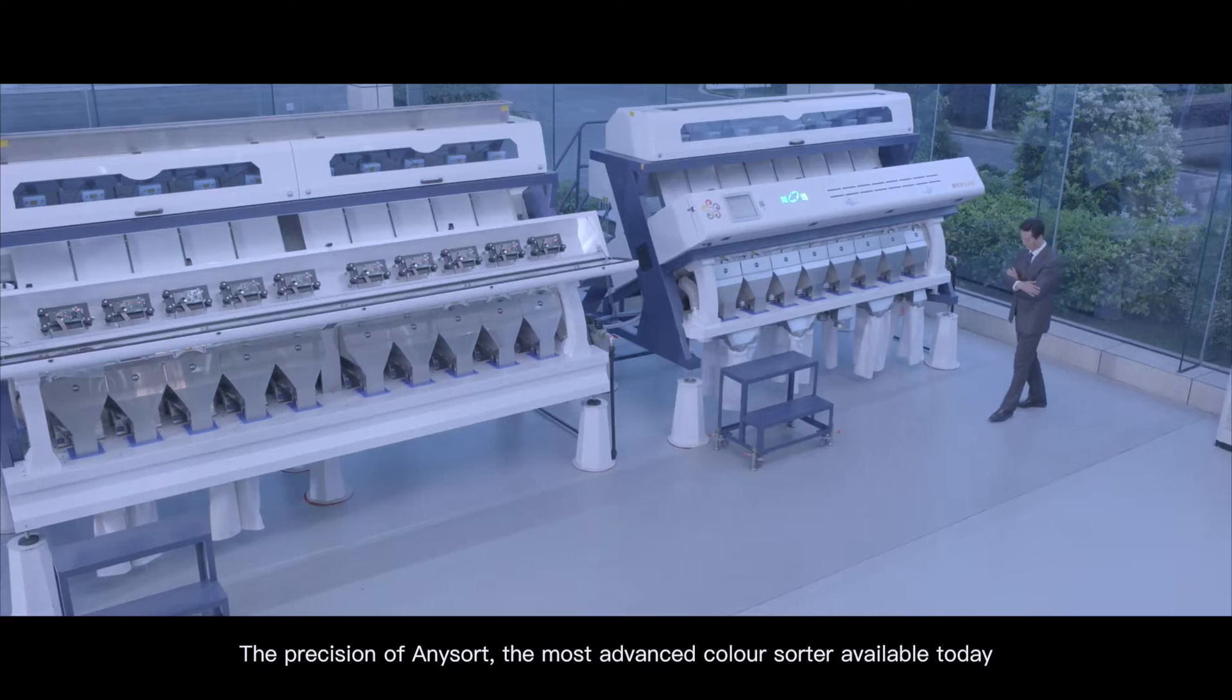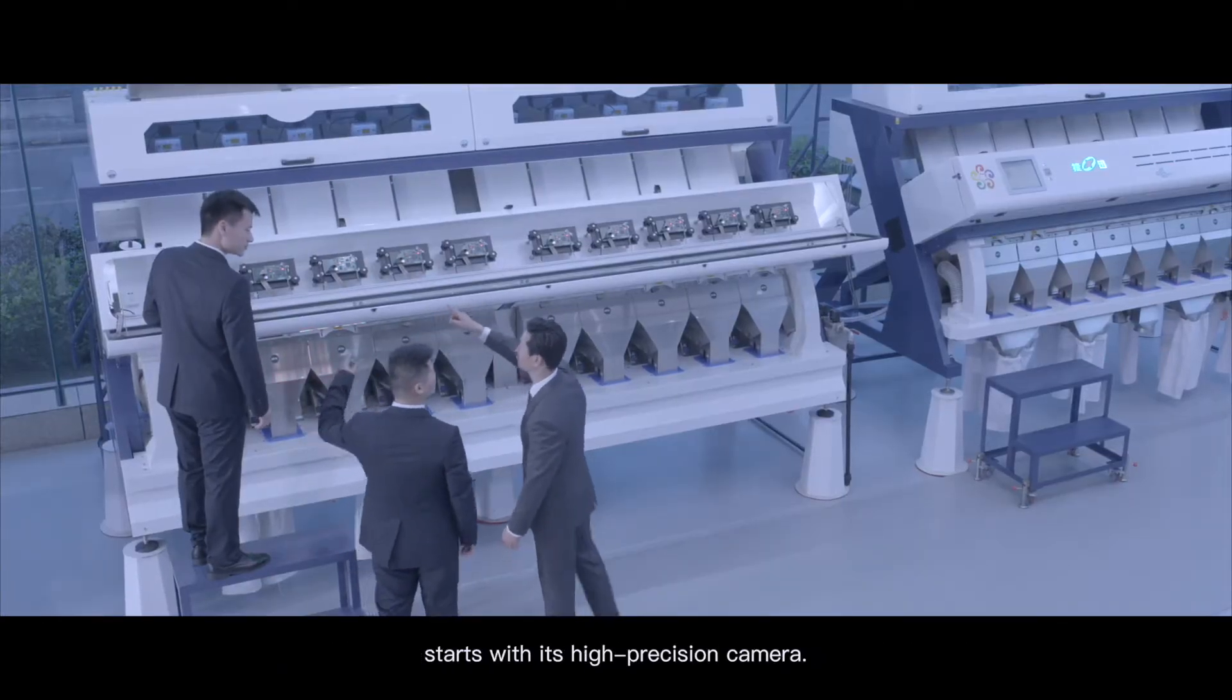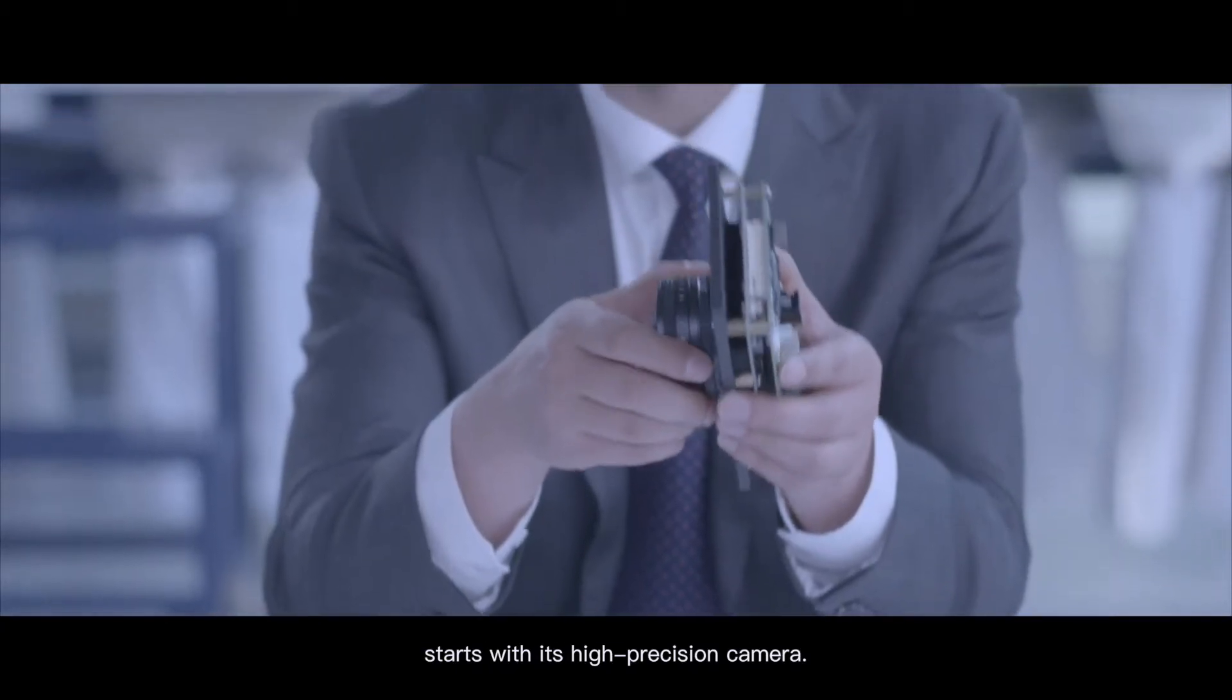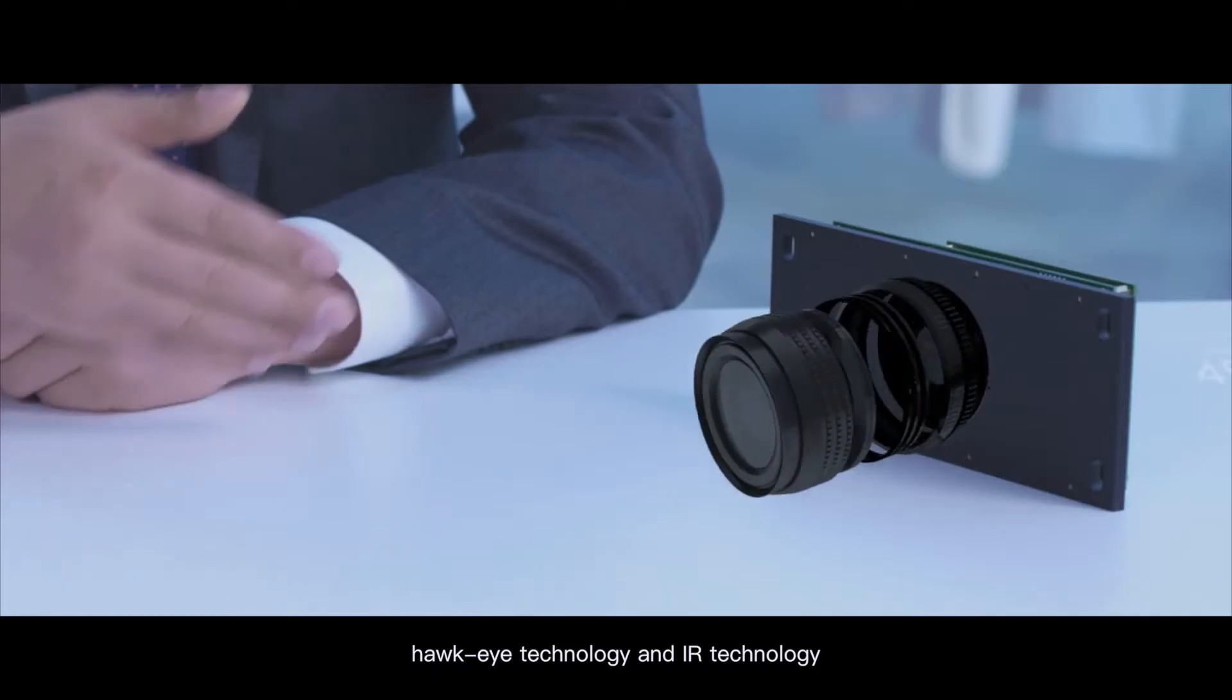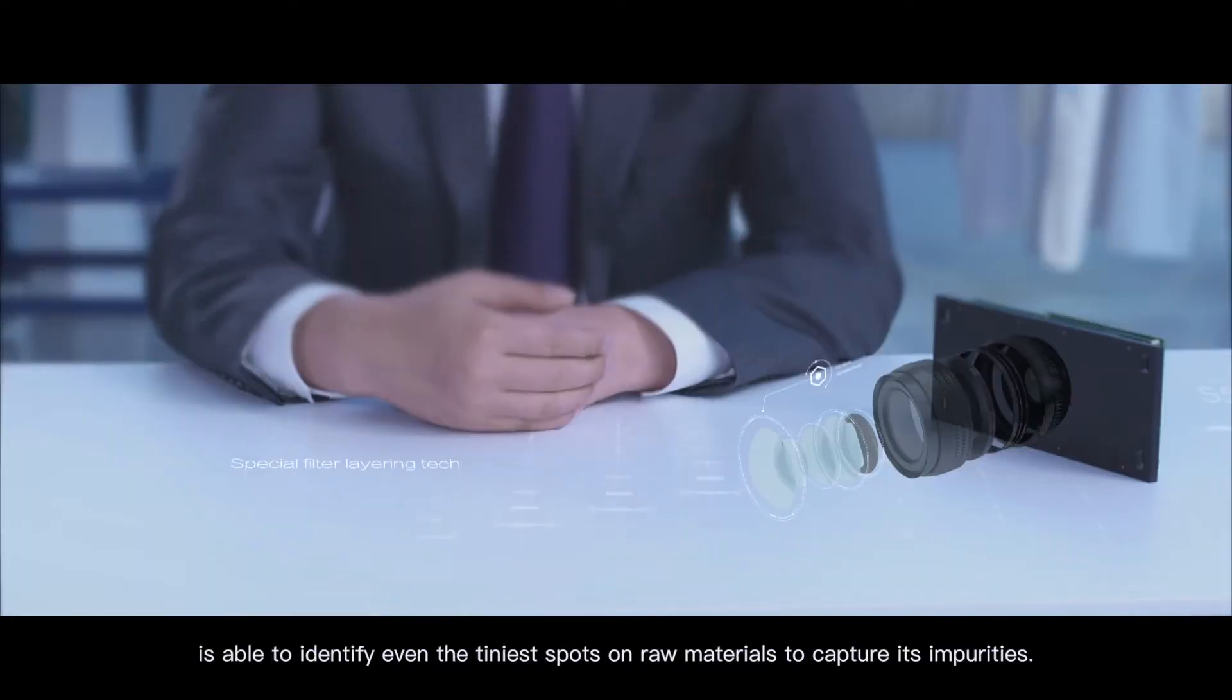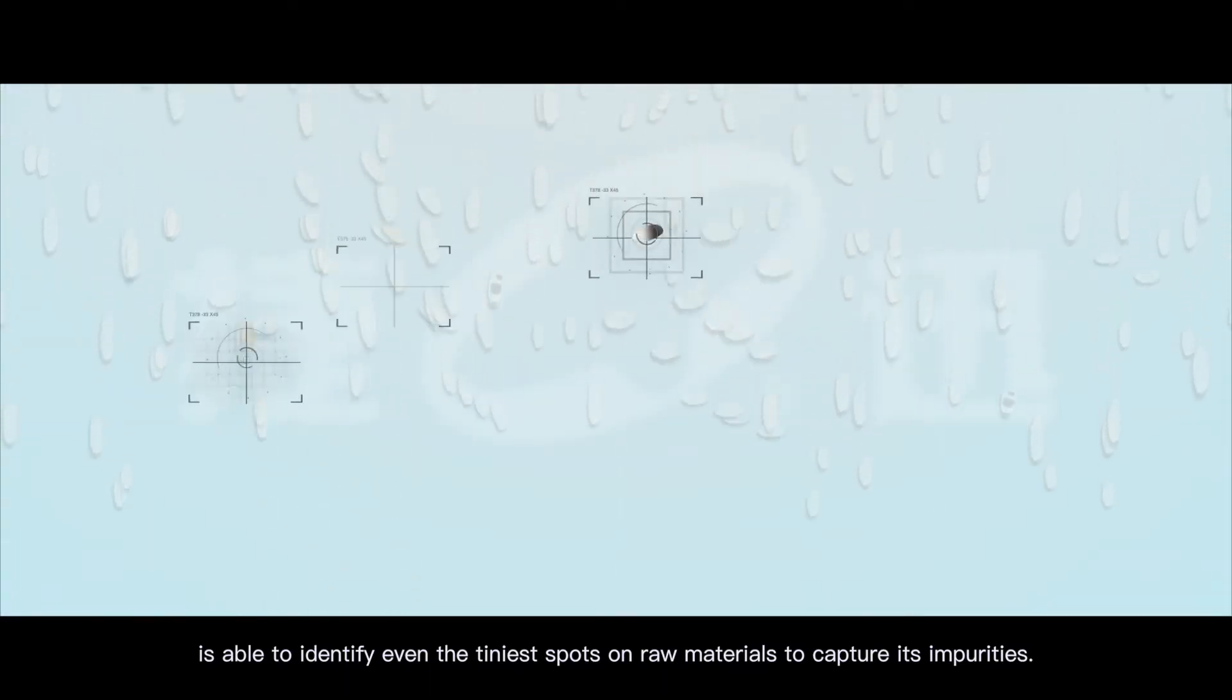The precision of Anysort, the most advanced color sorter available today, starts with its high-precision camera. The unique filter layering technology, Hawkeye technology, and IR technology is able to identify even the tiniest spots on raw materials.